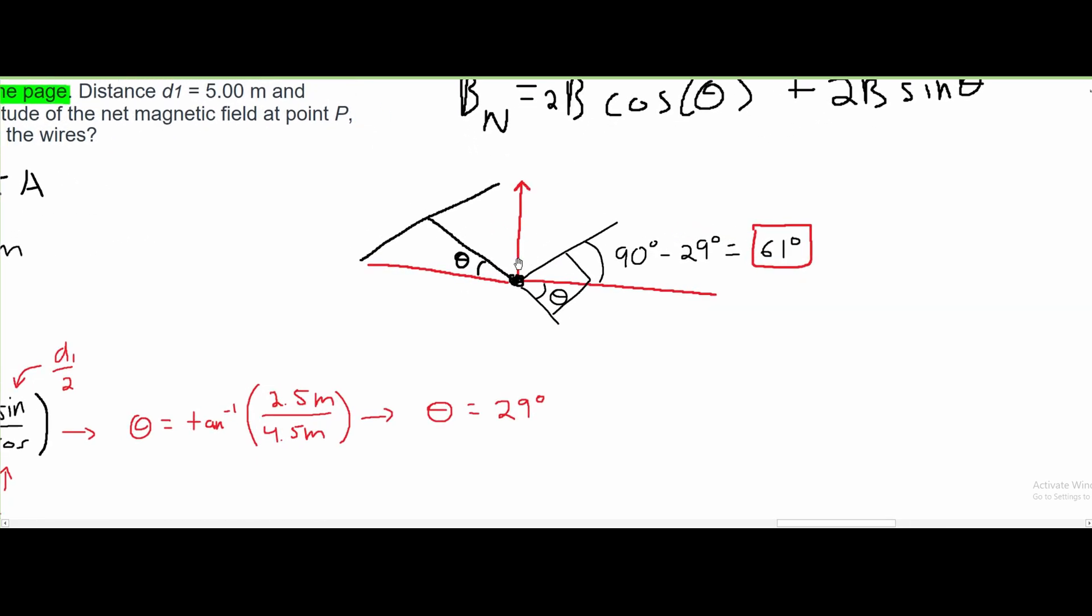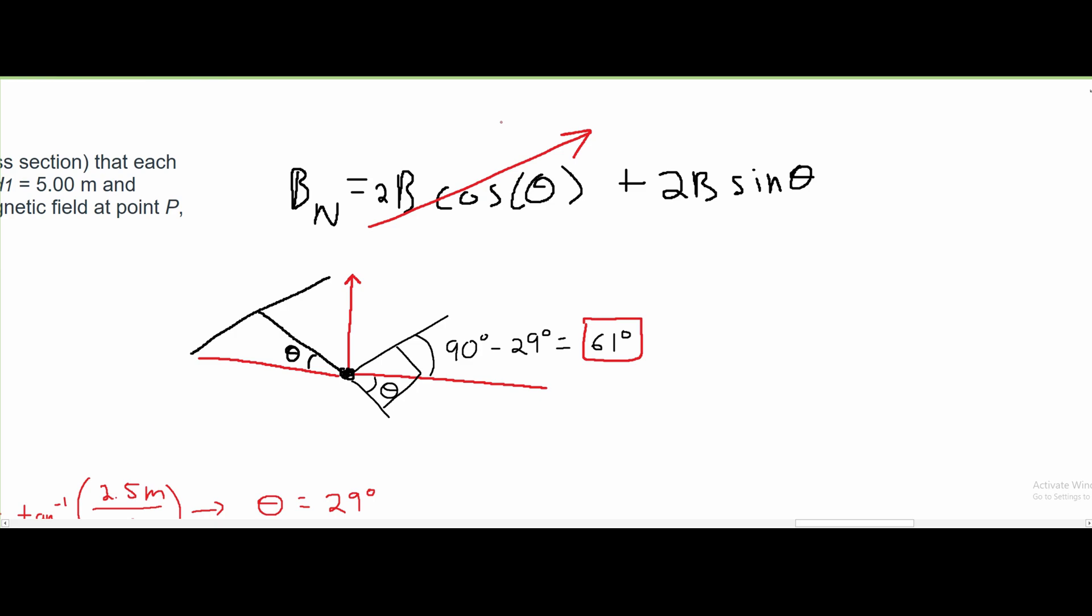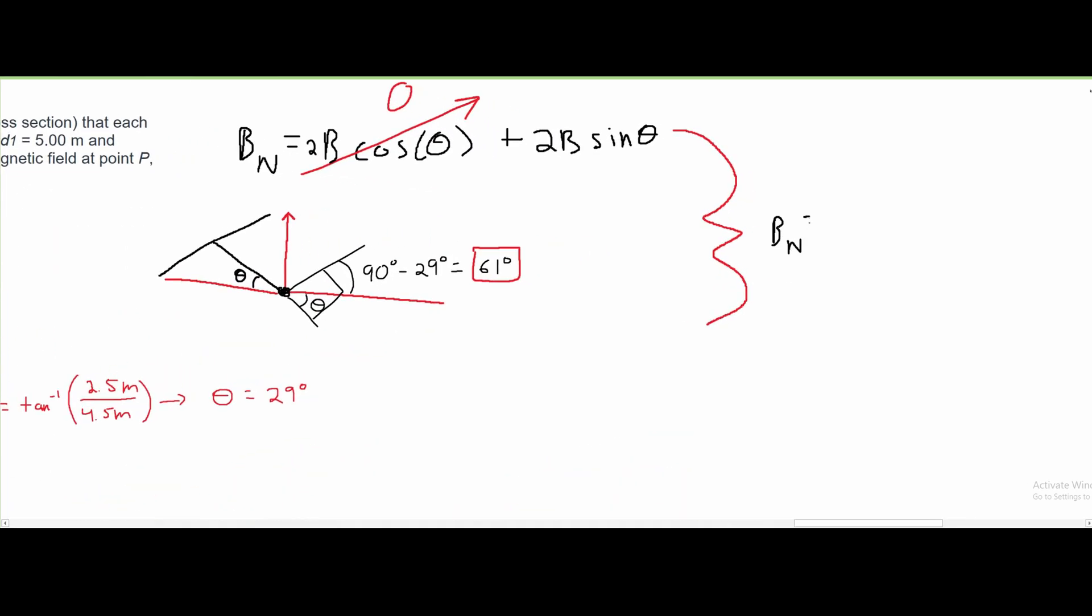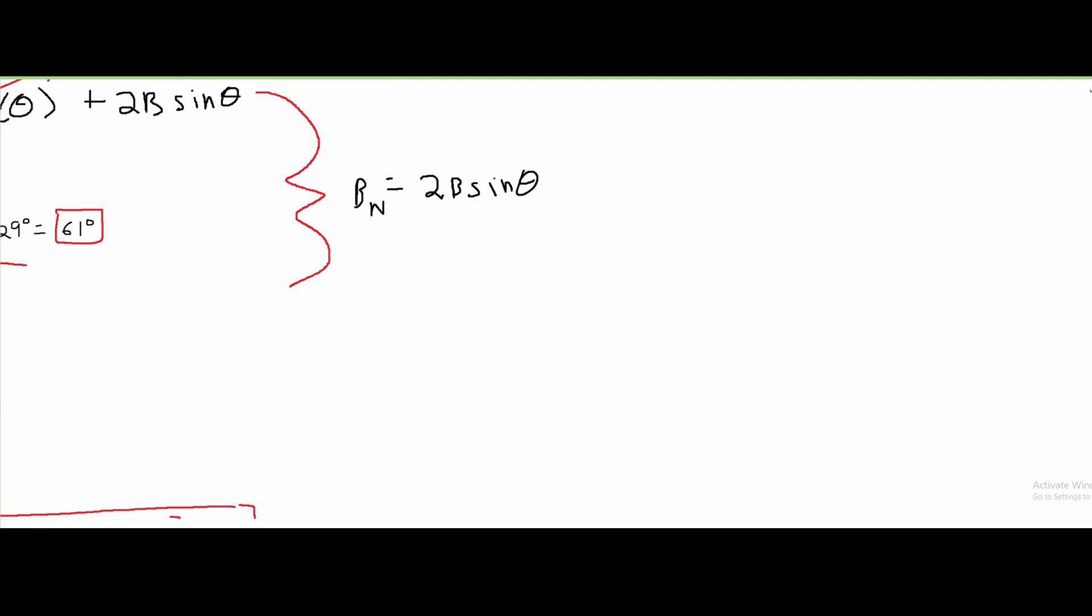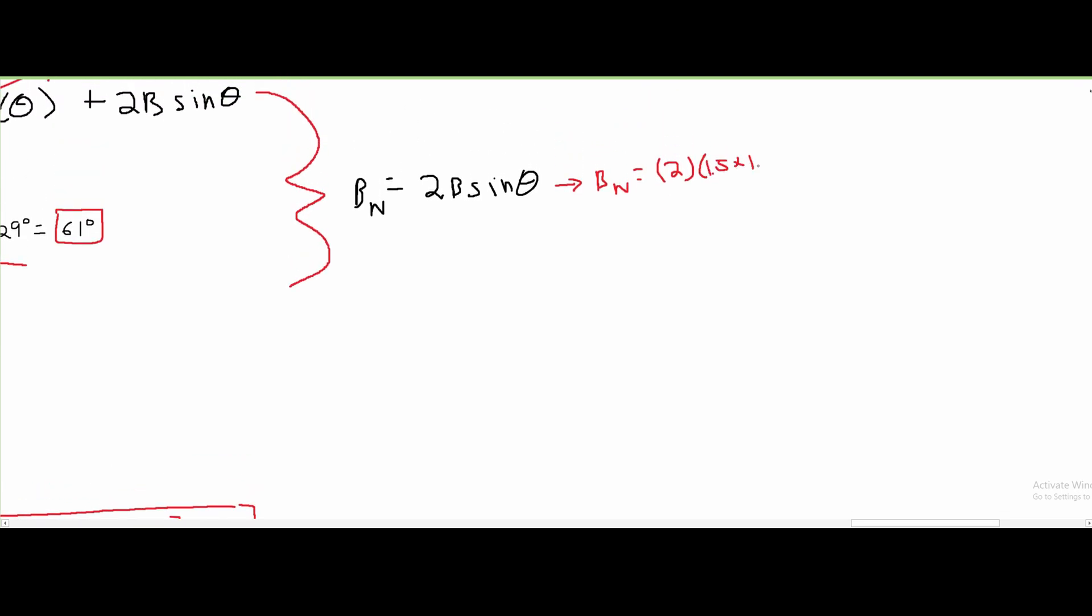From this 3D sketch we can also notice a second thing: our value is only going up in this direction. There is no x movement. Therefore we can get rid of this x value because we will not be evaluating it. We can set this to zero. Now we have B_net = 2B sin(θ). Continuing: B_net = 2 times our B, which is 1.5×10⁻⁷ teslas, times sin of theta, and our new theta is 61 degrees.